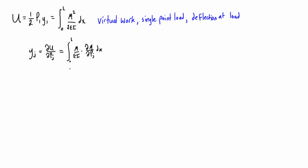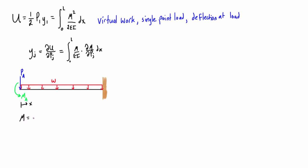So if you imagine we have a cantilever beam, as we go from left to right calling that x, the expression for the internal moment is going to be M equals negative Px minus one-half wx squared minus M_a. You can easily find this by doing a virtual cut, taking the free body diagram, and summing the forces with the internal shear force. We'll actually do this full example in the next video — I just want to go over the method in this video.